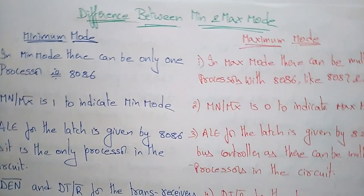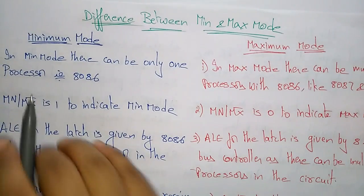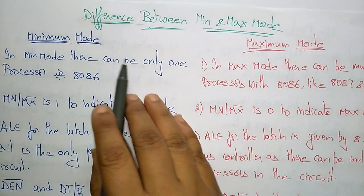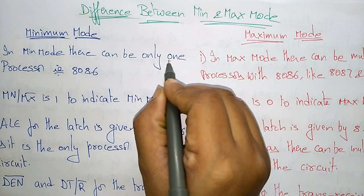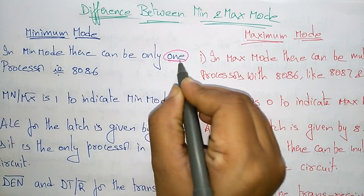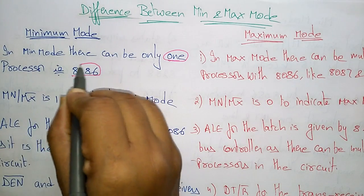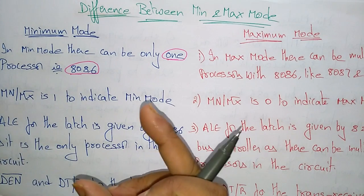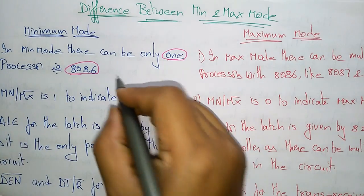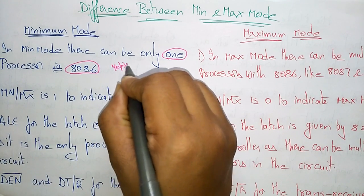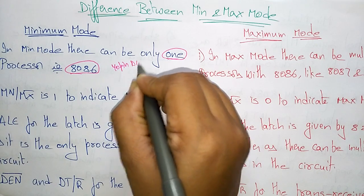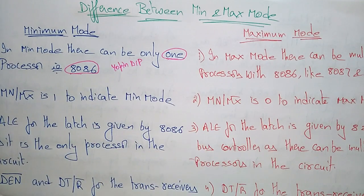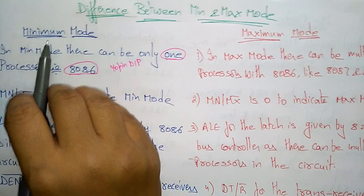In minimum mode, there can be only one processor. Remember that only one 8086 microprocessor is available. The 8086 microprocessor is a 40-pin DIP — Dual In-line Package — and only one processor is available in minimum mode.